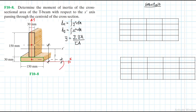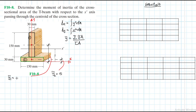So this one is our Y-centroid for part one, and this is our part two, so this is Y-centroid two, equal to half of 30, which is 15. And then our Y-centroid one is equal to half of 150, which is 75, plus 30. So this gives us 105.